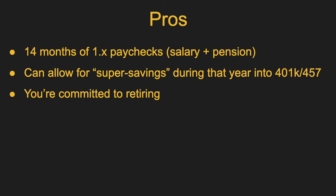During that year it can allow for super savings — you're making 1.6 times your normal pay, so you're making $30,000 to $70,000 more than you've been used to. You can plow that into a 401k or 457 and really bulk up your savings right before retirement, or pay down debt. A last pro is more psychological: if you declare a transition year with your district, you're committed to retiring. Technically you can change your mind, but it's a lot of work and a pain. For a lot of people, it's a psychological decision of 'I've made the decision and now I'm done,' so it's a way to feel better about that.